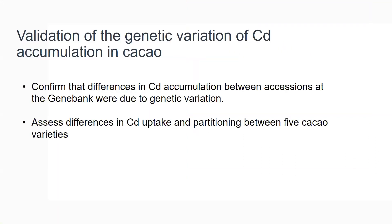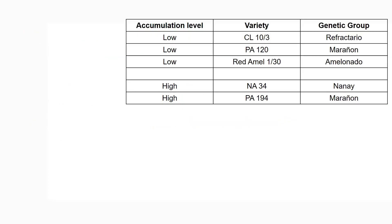For the validation of genetic variation of cadmium accumulation in cacao, we wanted to confirm that differences in cadmium accumulation between accessions at the gene bank was due to genetic variation, and then assess differences in cadmium uptake and partitioning between five cacao varieties. The five varieties were selected from the gene bank: three identified as low — CL103, PA120, and RedML130 — and two high varieties: NA34 and PA194.